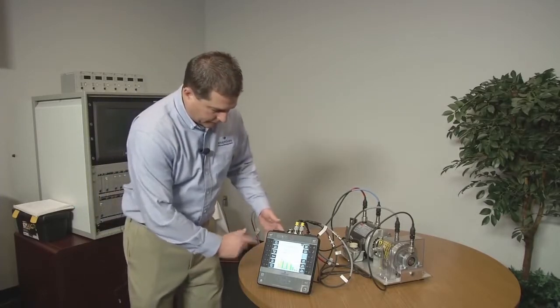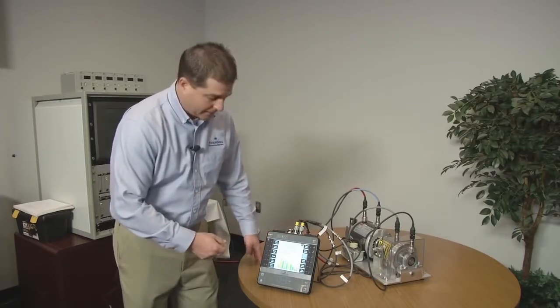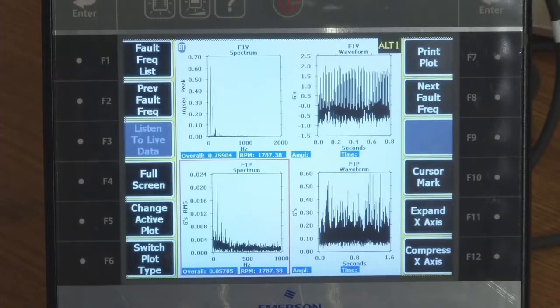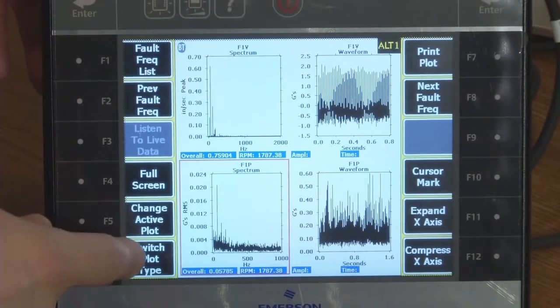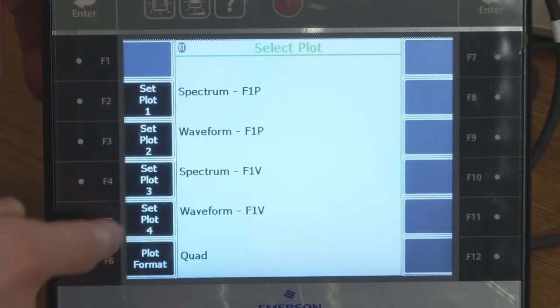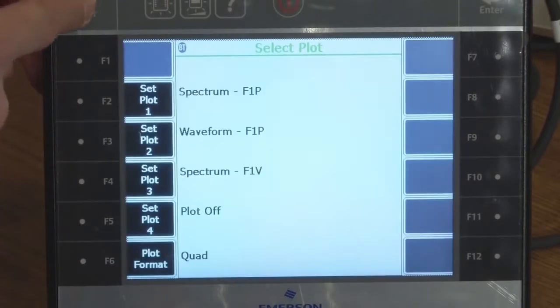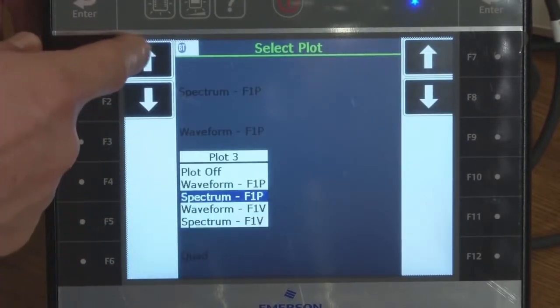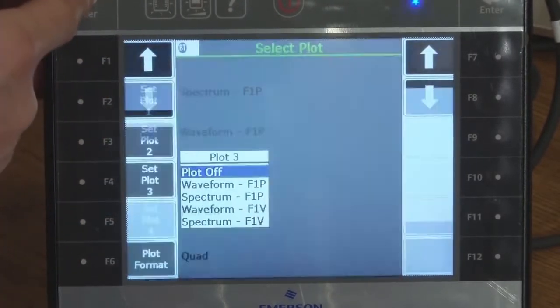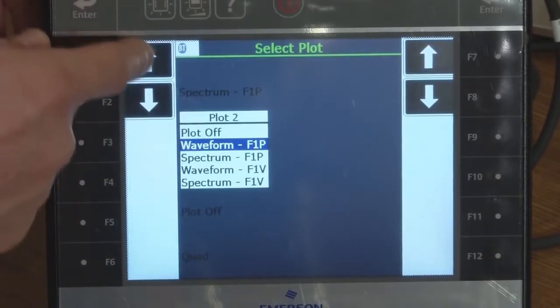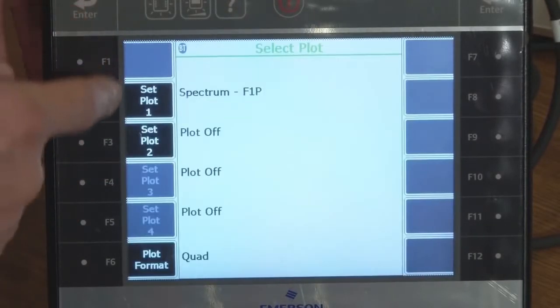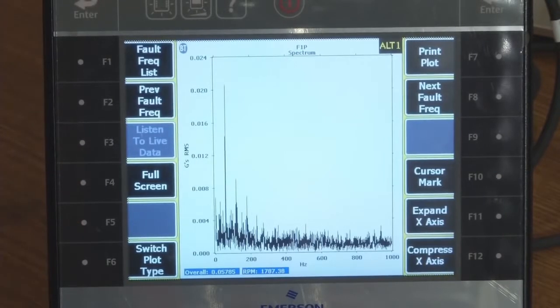One thing I can do is come down and press F5. Let's look at the data itself. F5 is plot data, and so it brings up my quad plot here. Now what I can do is turn off some of these other plots so I can magnify this particular plot a little larger. So I could go to the bottom plots and turn them off, and so now I'm just left with one spectrum.